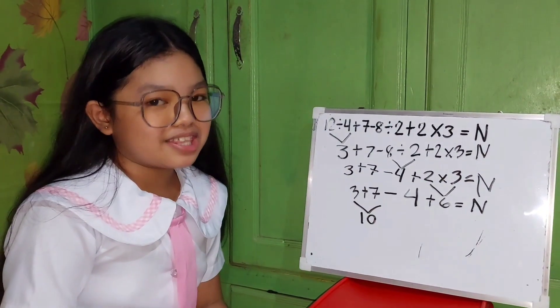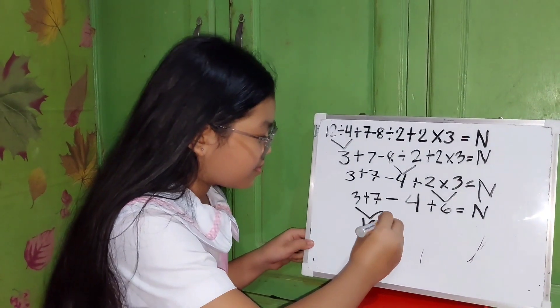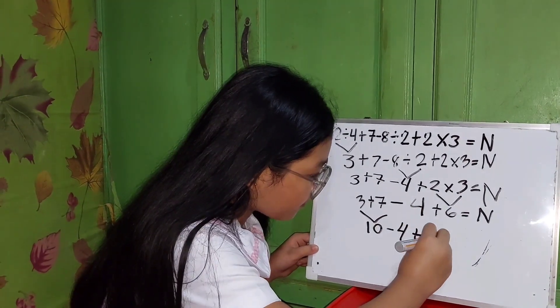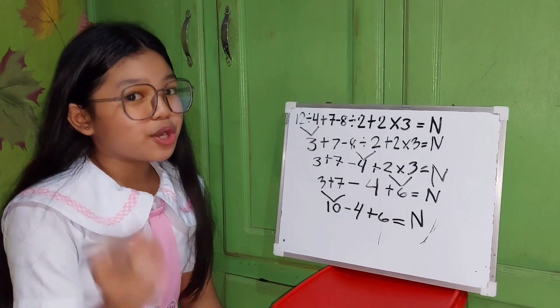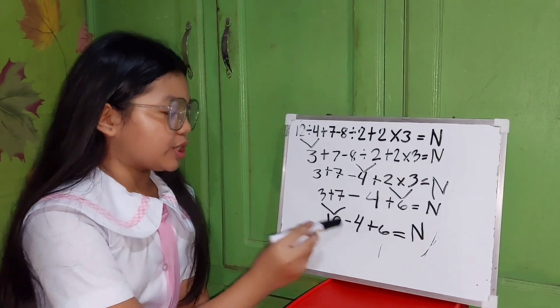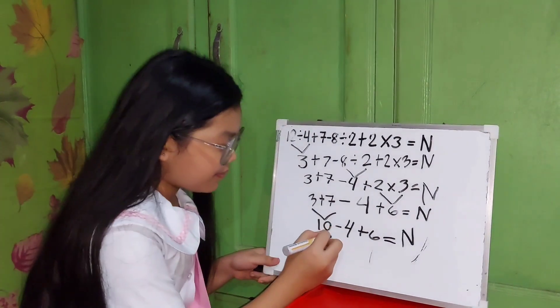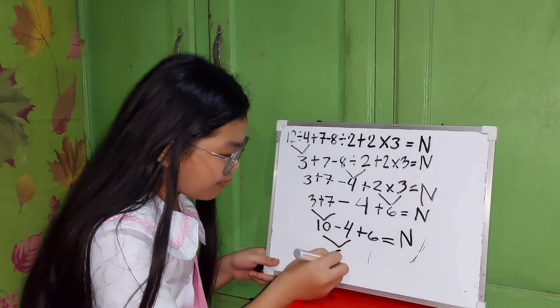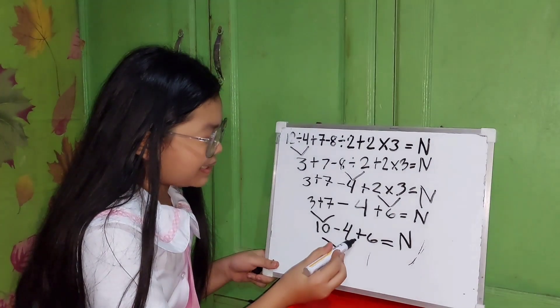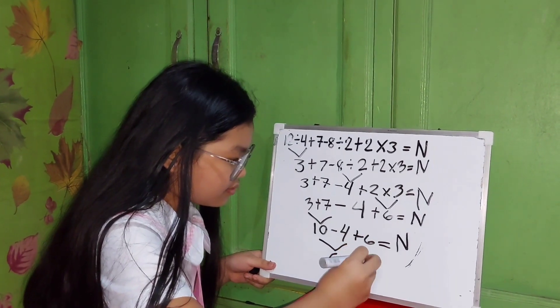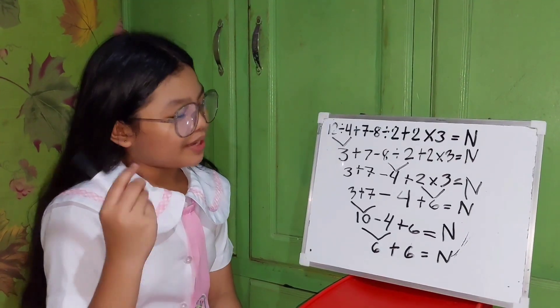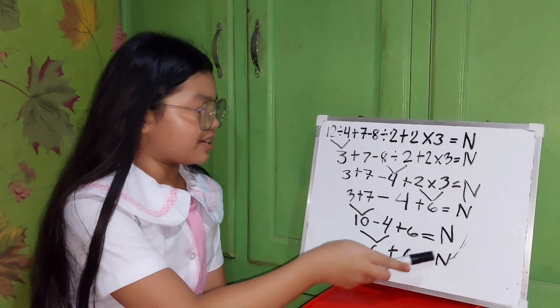Then copy the rest. Next, we are going to subtract 10 minus 4. 10 minus 4 equals 6. So we have here: 6 plus 6 equals n.